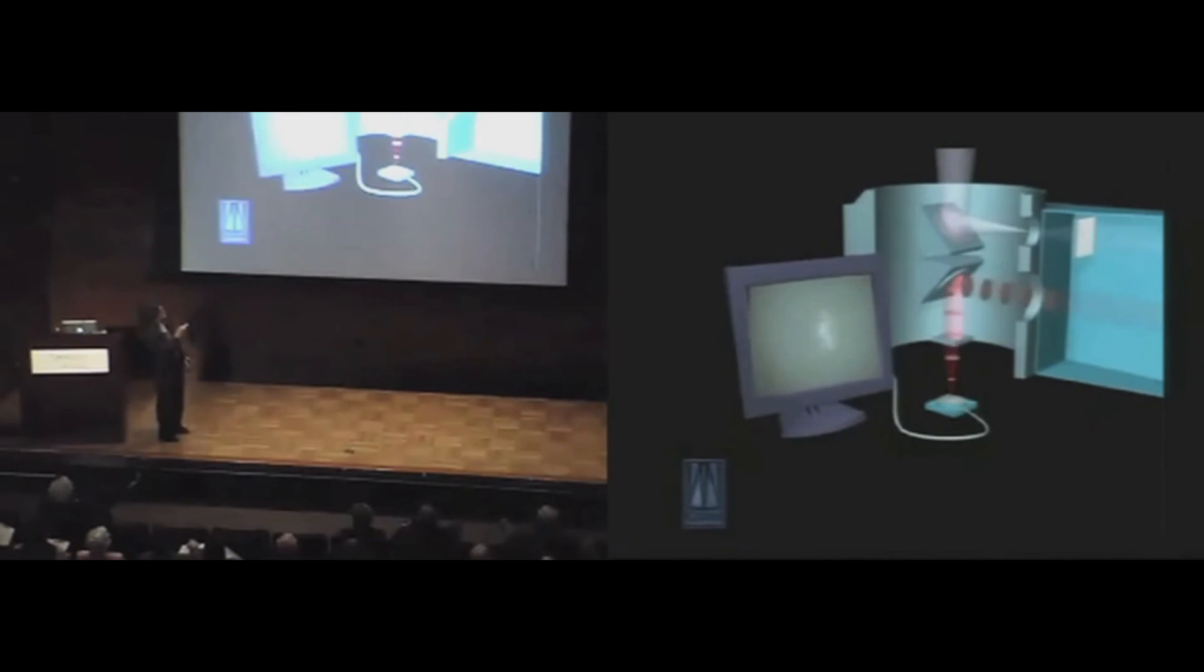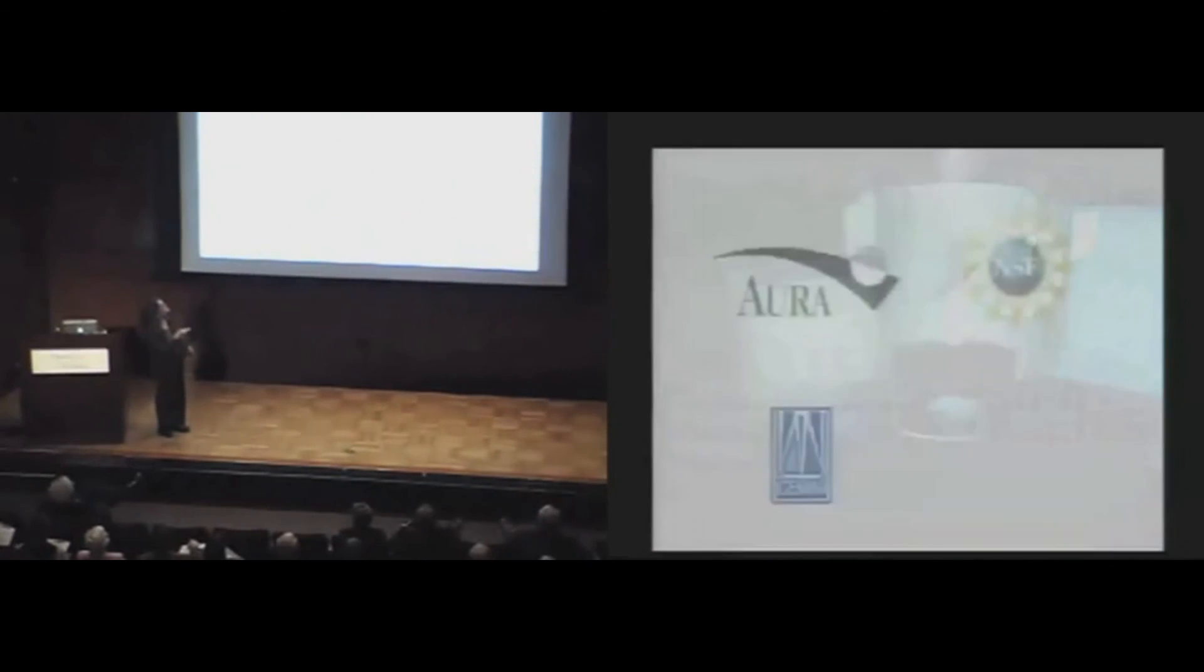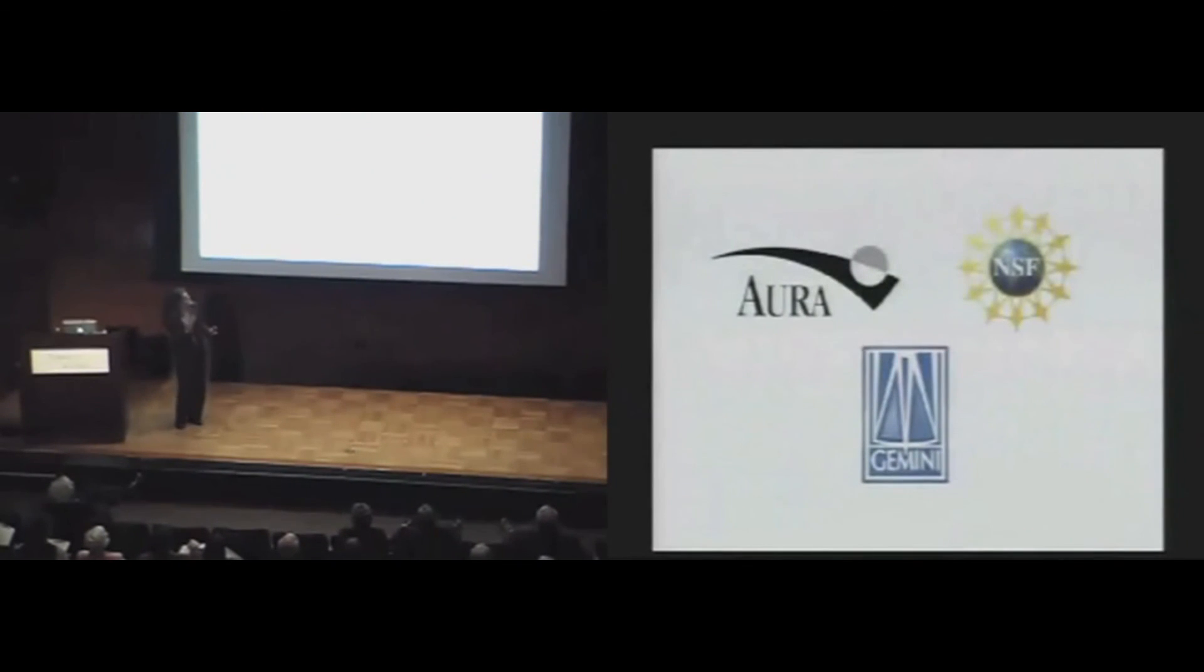And then instead of seeing this, we're going to see something very tight. It doesn't fully represent actually what's happening because it's an improvement in a factor of 20. But nonetheless, it gives you conceptually the idea that you have some wiggling mirror that undoes the effects of the atmosphere.